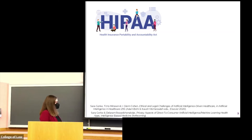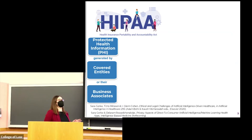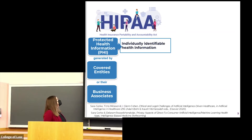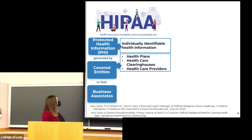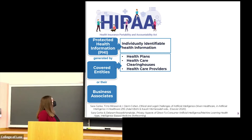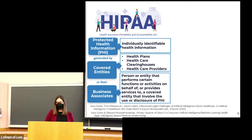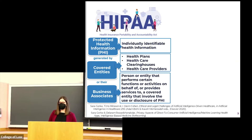There is an issue with HIPAA in the current health care environment because HIPAA only covers so-called protected health information generated by HIPAA-covered entities or their business associates. Protected health information is usually individually identifiable health information. HIPAA-covered entities are health plans, health care clearinghouses, and health care providers who transmit health information electronically in connection with particular transactions. A business associate is a person or entity that performs certain functions or activities on behalf of, or provides services to, a covered entity involving the use or disclosure of protected health information.